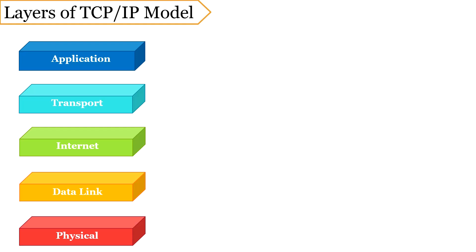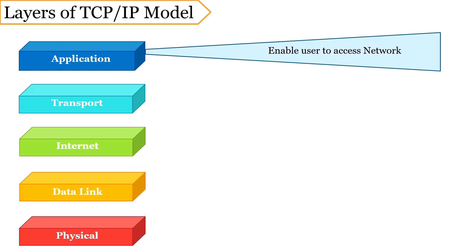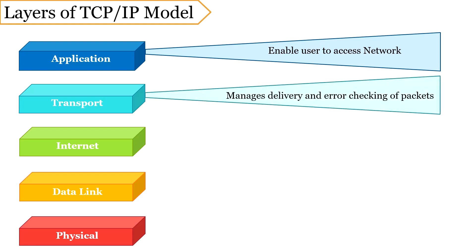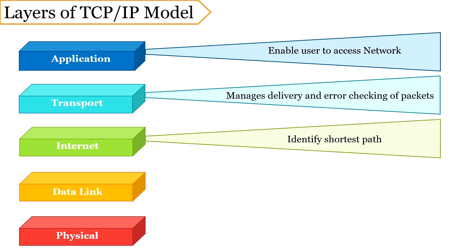Now let us discuss the layers of the TCP/IP model. First is the application layer, which is a combination of the session layer, presentation layer, and application layer of the OSI model. It enables the user, that can either be a human or a software, to access services of private or global internet. Next is the transport layer, which manages process-to-process delivery of packets and error checking.